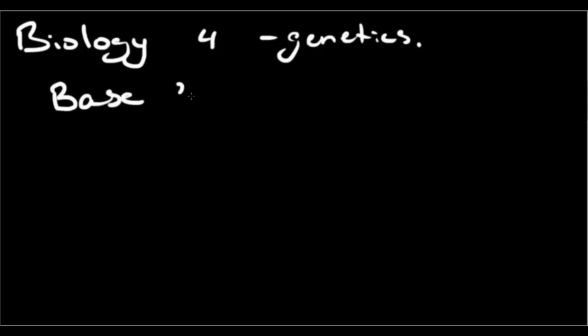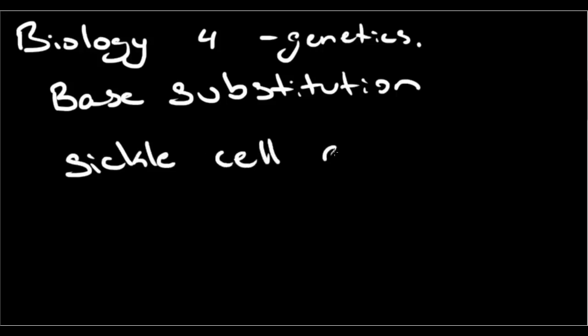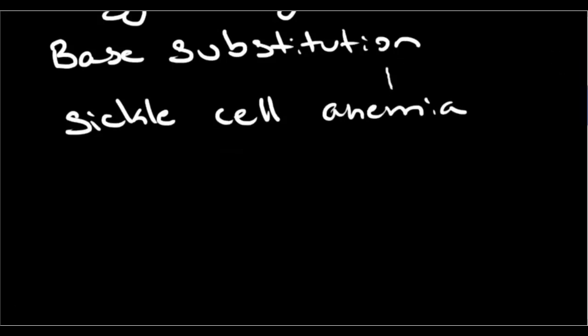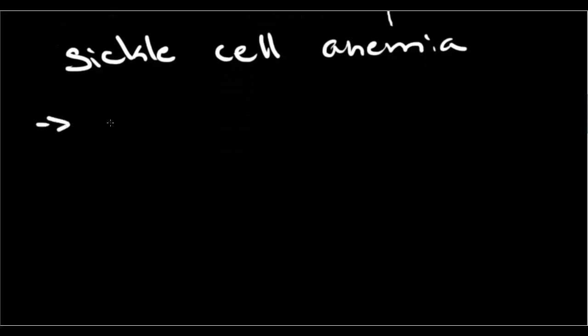Now that we know what mutations are, going back to biology, still on genetics, we just spoke about mutations. Now we're only going to be talking about the base substitution mutation, because we are now talking about a disease called sickle cell anemia. Now what sickle cell anemia is, this is a genetic disease. This is genetic, and what that means is it is inherited.